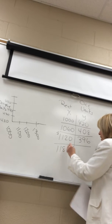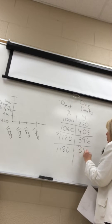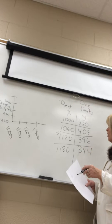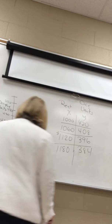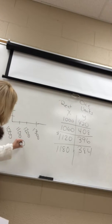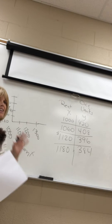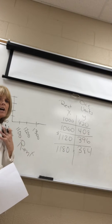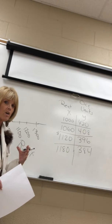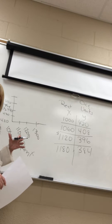You keep increasing the rent and subtracting 12 to see how many units are occupied. Then you can graph it: rent on the x-axis, occupied units on the y-axis. This is just to give yourself a feel for what's going on in the problem — it's a linear function.